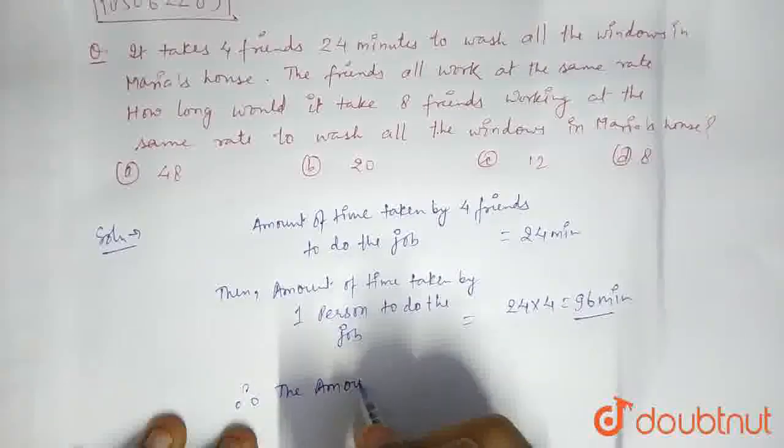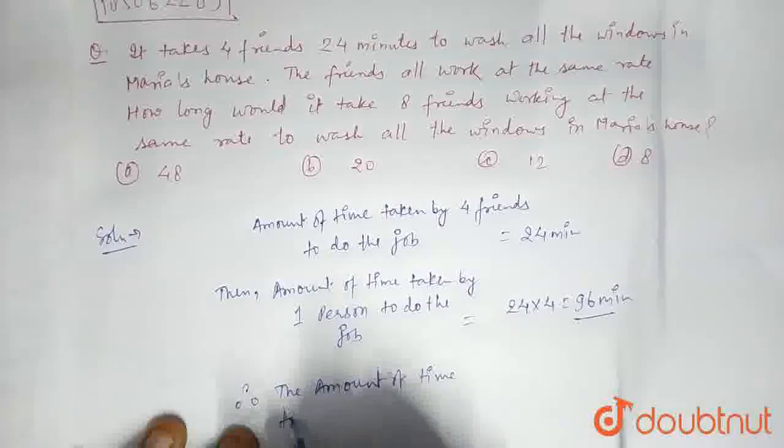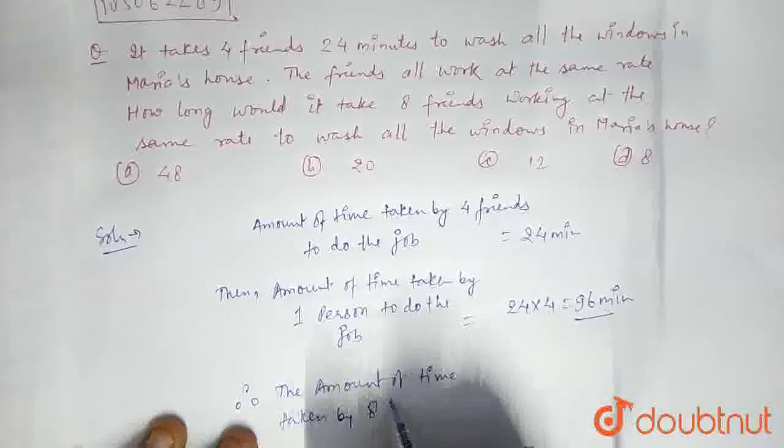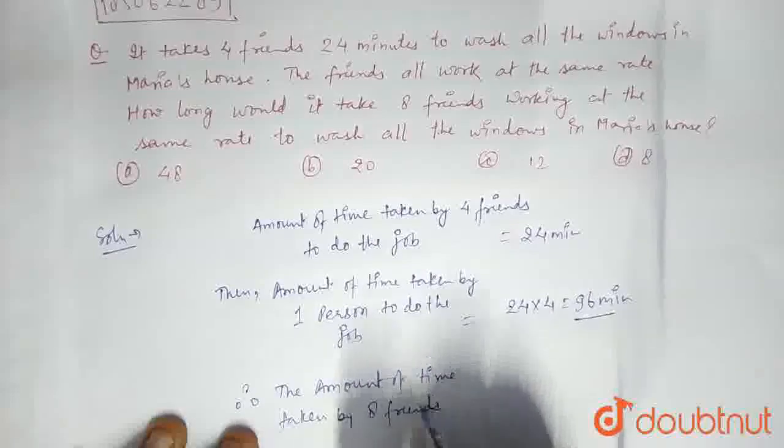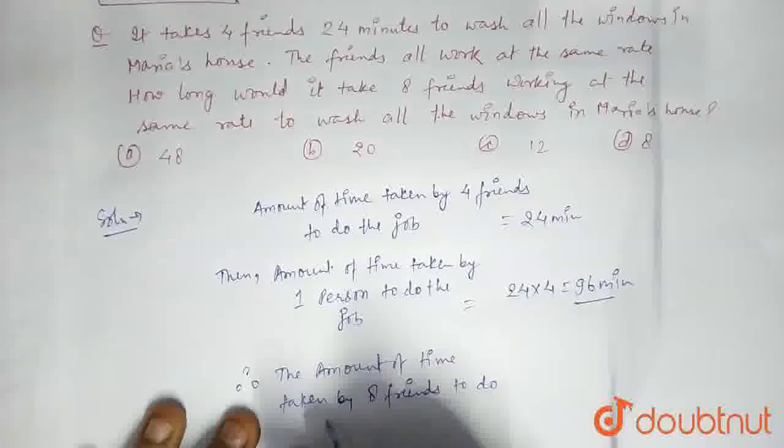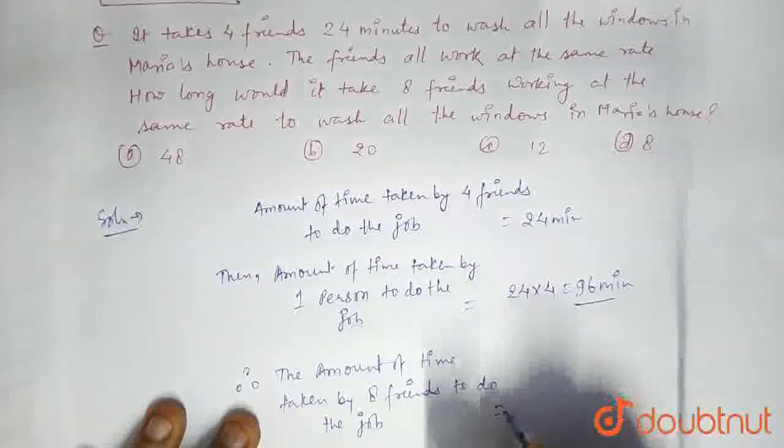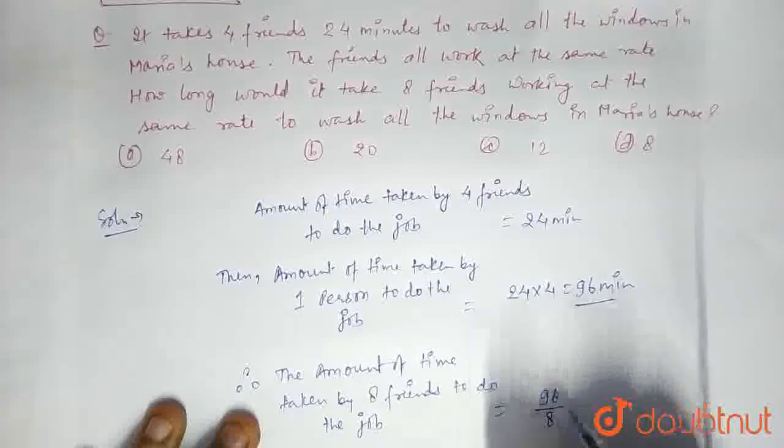So, the amount of time taken by 8 friends to do the job equals 96 divided by 8.